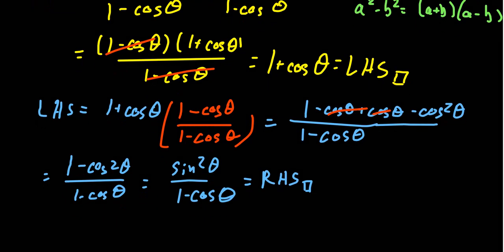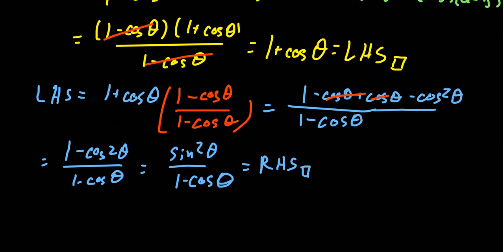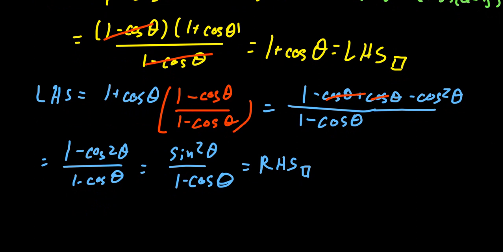I did want to illustrate the second technique because it shows another way you can utilize the difference of squares. Basically, if you have a sum of two trig functions — like one plus cosine, one plus sine, or something like secant minus tangent — you can often multiply by the so-called conjugate. You take the expression and swap the plus to a minus. Multiplying by that often gives you the difference of squares you're looking for, so you can make good use of those identities.